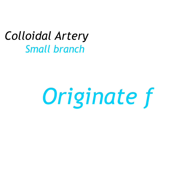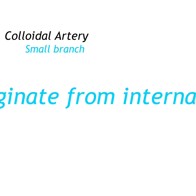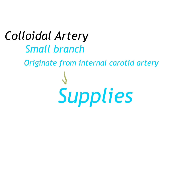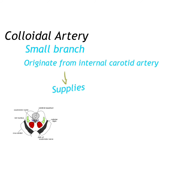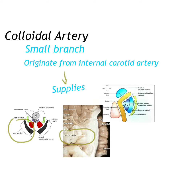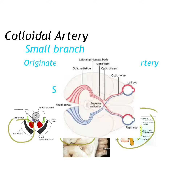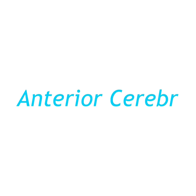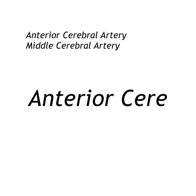The third branch is the choroidal artery. It is a small branch that originates from the internal carotid artery. It supplies various structures such as the crus cerebri, the lateral geniculate body, the internal capsule, and the optic tract.